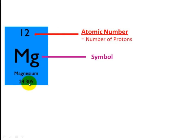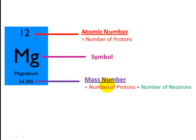And there is this other number underneath which is called the Mass Number. The Atomic Number equals the number of Protons. The Mass Number is equal to the number of Protons plus the number of Neutrons.